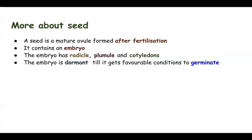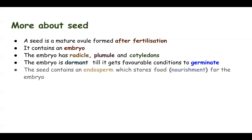The embryo is dormant until it gets favorable conditions to germinate. Just after a seed is formed, if it is sown in the soil, it may not form a plant because the embryo goes through a period of rest. That period of rest until it gets all suitable conditions for germination is called the dormancy period. The seed contains an endosperm which stores food or nourishment for the embryo, generally in the form of starch.